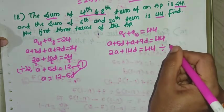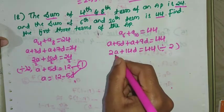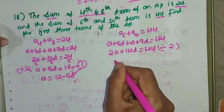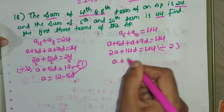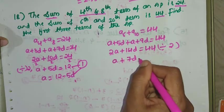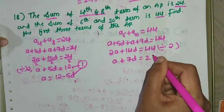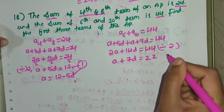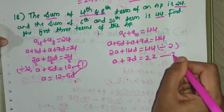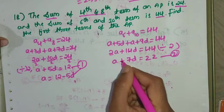Dividing the whole equation by 2 gives: A + 7D = 22. This is equation number 2. Now substitute A from equation 1 into equation 2.